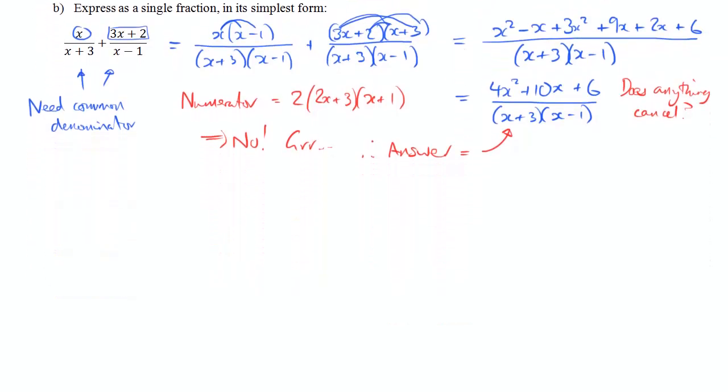Right. The last part here, part c. We've got a similar thing. We've got to add two fractions together. But there's a trick here, and it's a bit like the trick that we saw in part a, which is that we've got to notice there's a difference of two squares going on here. x squared minus 1 is the same as x plus 1, x minus 1.